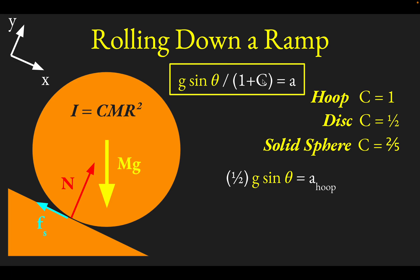So let's see how these would play out. A hoop will have an acceleration of 1 half g sine theta, because again, if C is 1, you'd have g sine theta over 2. If we plug in for a disk, C value of 1 half, 1 plus 1 half would be 3 halves. But then taking the reciprocal of that would give us 2 thirds.